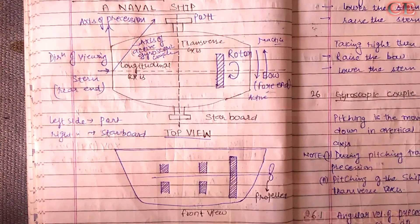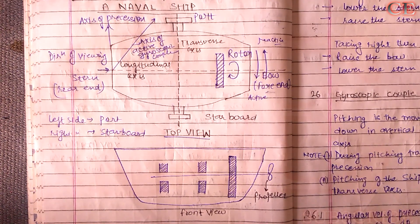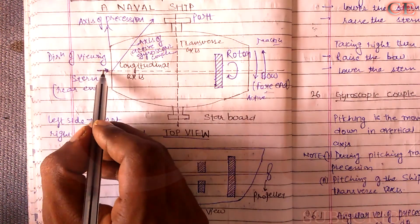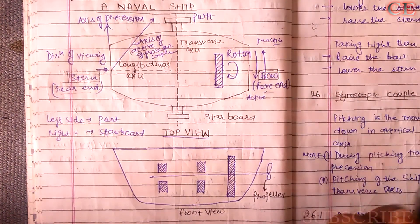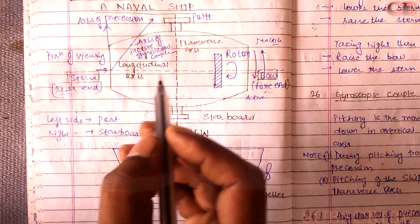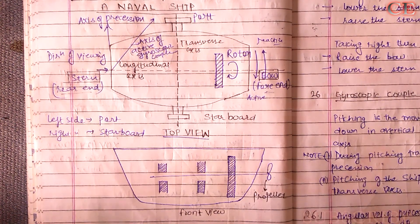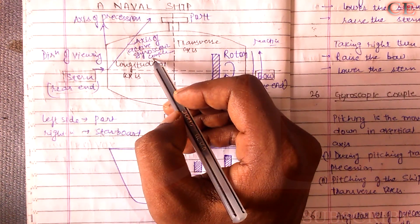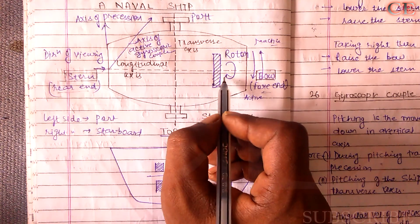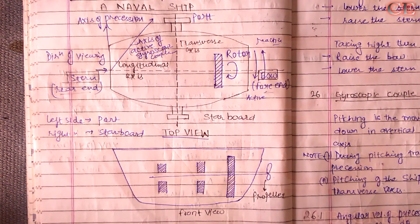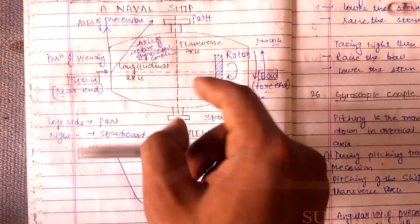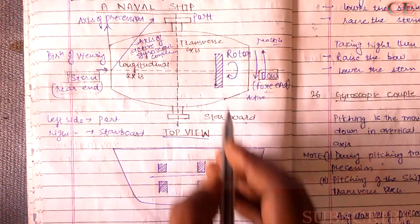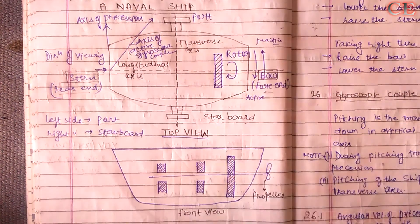Here are the top and front views of a naval ship. The propeller is visible from the stern, which is the rear end of the ship. The front side is called the bow — similar to how an airplane has a nose and tail. The left side of the ship is called port and the right side is called starboard. This is the axis of precession, and this is the active gyroscopic couple axis. The rotor rotates in a clockwise direction as shown.